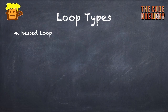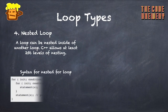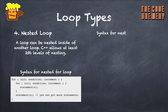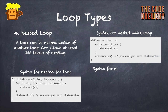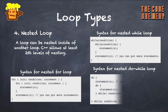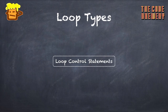Mostly we only see three types of loops — do-while, while, and for — but the fourth, nested loop, is much less talked about. A loop can be nested inside another loop. C++ allows at least 256 levels of nesting, though most loops only go four or five levels. The syntax shows a for loop written inside another for loop. The same applies to while and do-while loops — we write loops inside loops, making them nested.